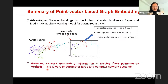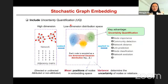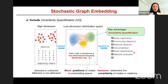Stochastic graph embedding addresses this by embedding the high-dimensional graph into a low-dimensional density function space. Each graph node is encoded as a low-dimensional Gaussian distribution in terms of mean and variance. The mean indicates the position of the node in embedding space, and the variance determines the uncertainty of the nodes—the radius of the ellipse shows the standard deviation from the variance output. This is very useful for community detection, link prediction, and node classification.